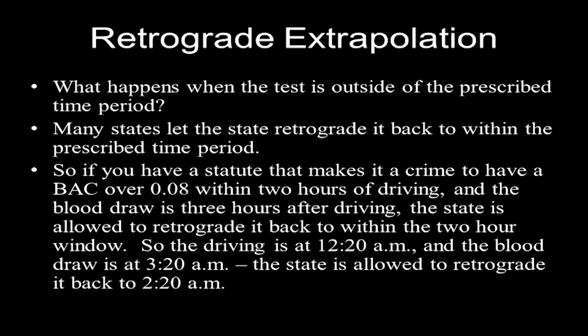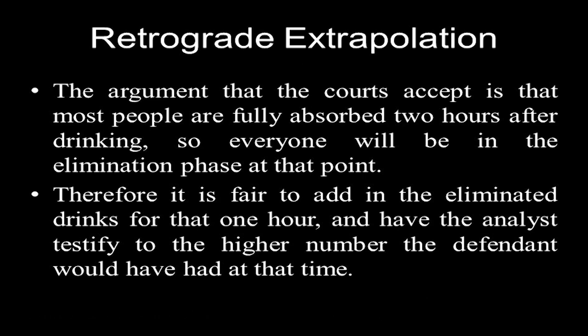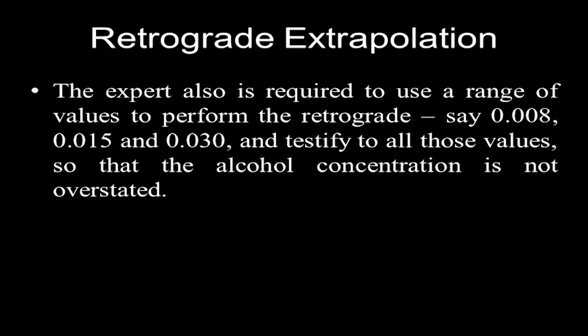You would think: if it's a crime to have an alcohol concentration within two hours and they have a test at three hours, we're kind of done. But you would be wrong. The argument the courts accept is that most people are fully absorbed within two hours of drinking, so everyone will be in the elimination phase two hours after they're stopped. Therefore, it's fair to add two hours of elimination and have the analyst testify to that higher number, giving a range of elimination rates — .008, .015, .03.